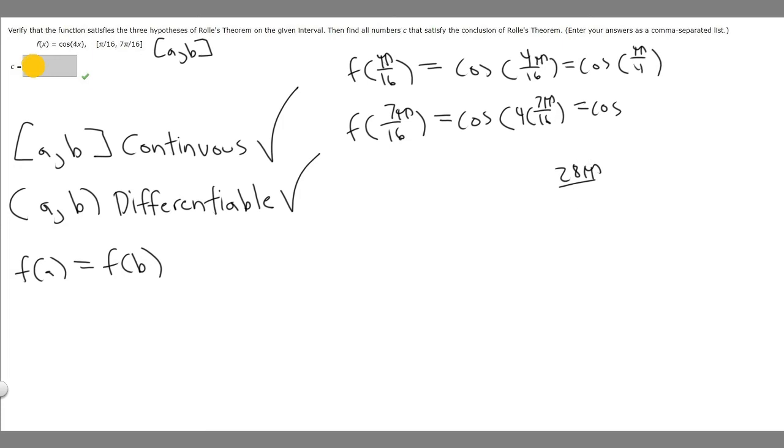That's basically going to equal the cosine of 28 pi over 16 but we can simplify this. We can divide both by 4 which will equal 7 pi over 4.